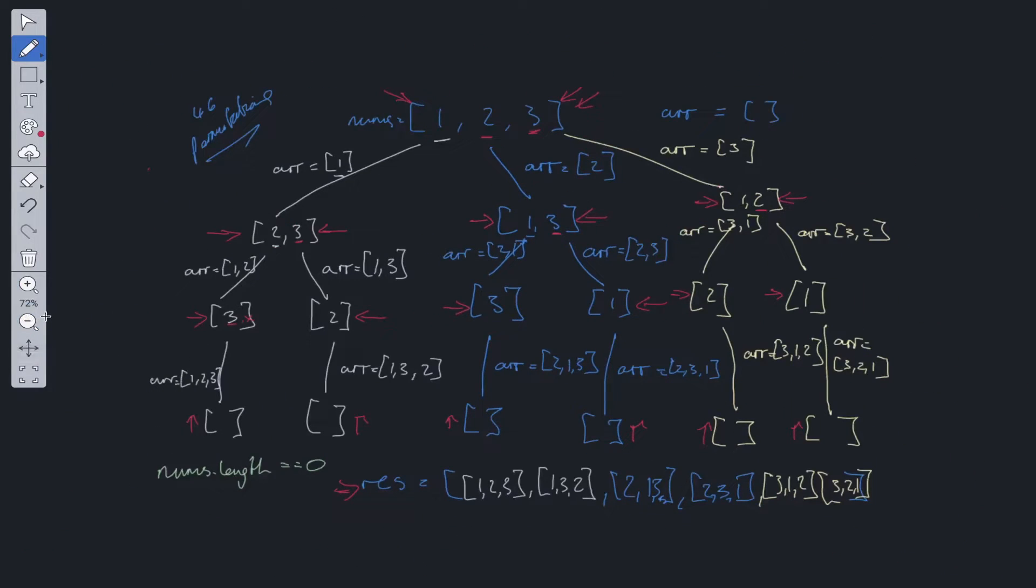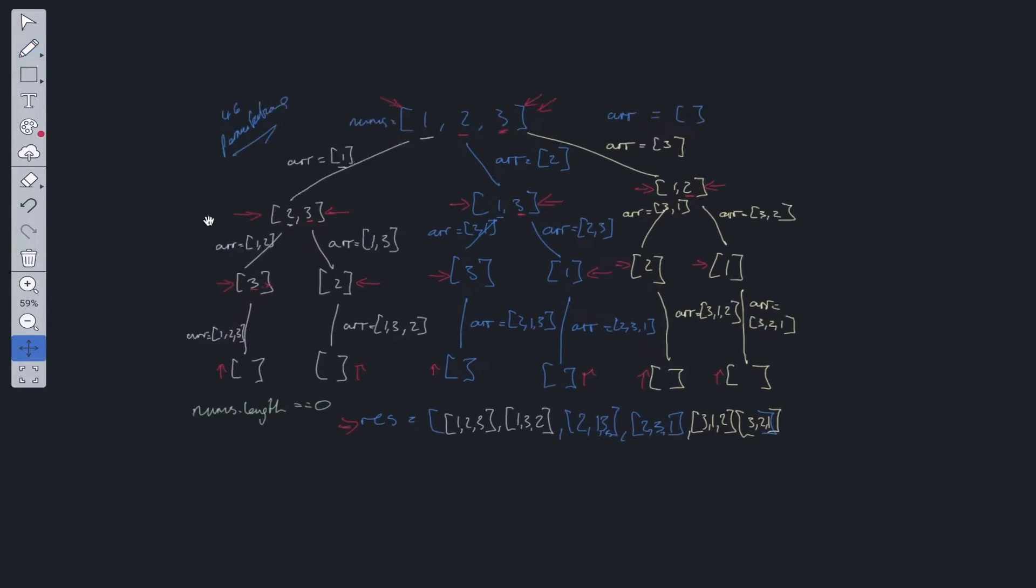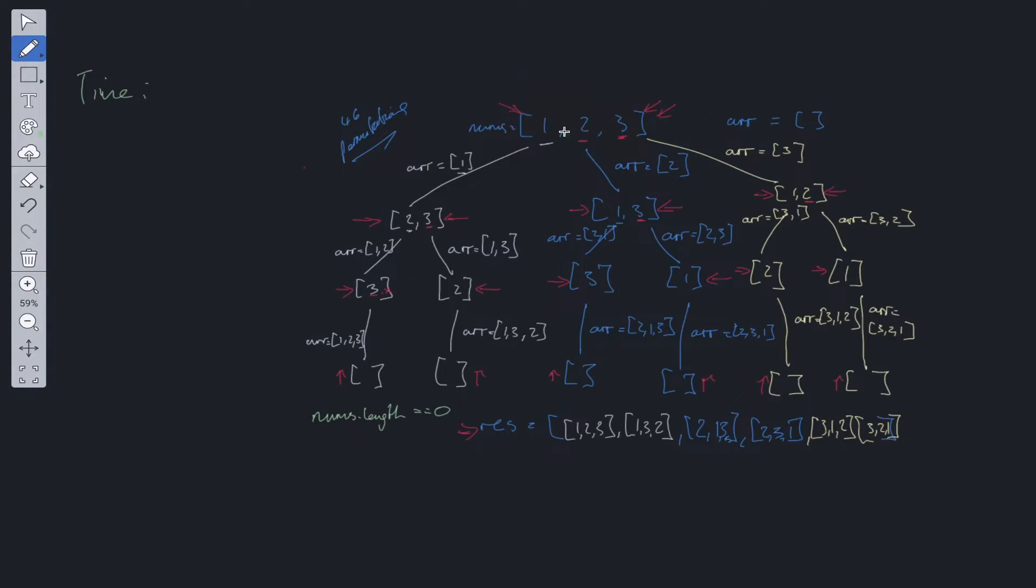Now we can talk about the time complexity of this algorithm. So we initially have to loop through this number array, so initially it's O of N. But with recursive calls, especially in this case, what we've got is three different options. We've got one option here, another option here, and another option here. This goes to two options, then one, then none. So that's three to two to one.